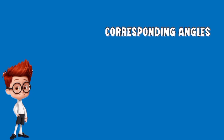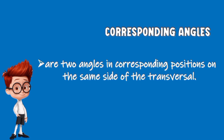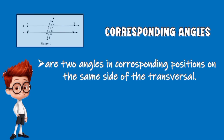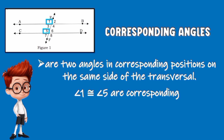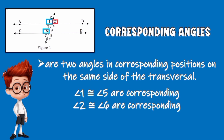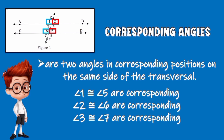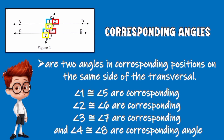Corresponding angles are two angles in corresponding positions on the same side of the transversal. Based on the figure: angle 1 and angle 5 are congruent corresponding angles; angle 2 and angle 6 are congruent corresponding angles; angle 3 and angle 7 are congruent; and angle 4 and angle 8 are also congruent corresponding angles.